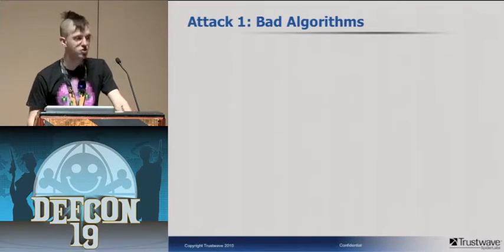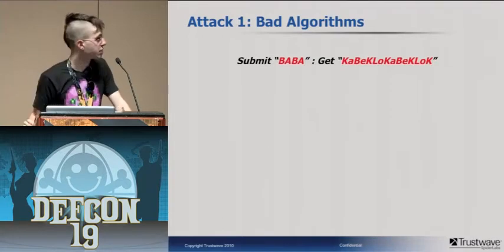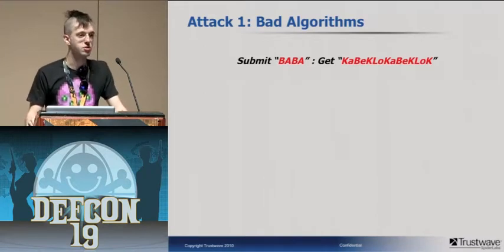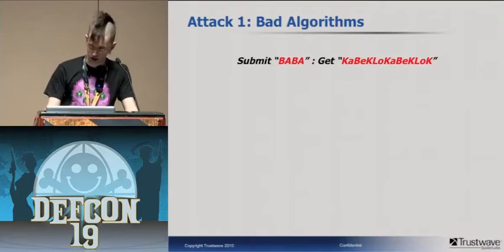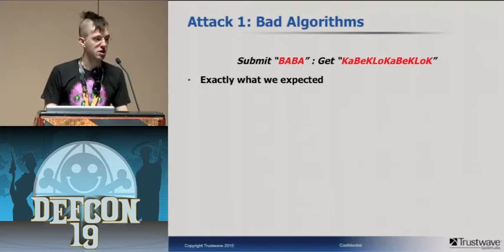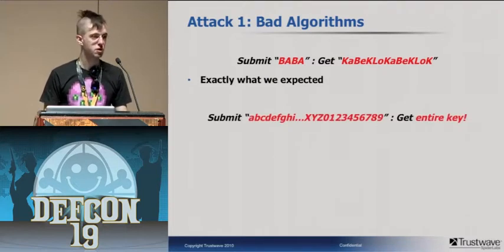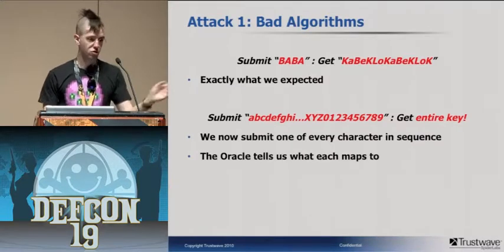It also doesn't seem to change on position. Submitting a variation on the last pattern confirms our assumptions — uppercase B maps to ABE and uppercase A maps to LO. The substitution doesn't seem to change no matter where the character is in the plaintext. Next we submit every character and get back the entire substitution key — what every character maps to. This is a trivially weak cipher, and the oracle has helped us totally destroy it.